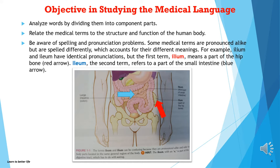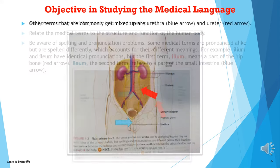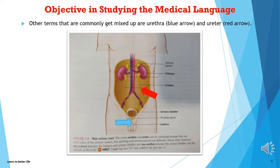For example, ilium and ileum have identical pronunciations, but the first term, ilium, means a part of the hip bone, and ileum, the second term, refers to a part of the small intestine. Other terms that commonly get mixed up are urethra and ureter.